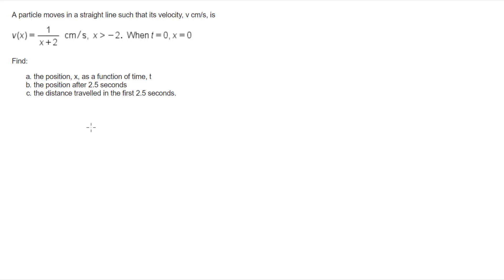In this video I'm looking at a question where a particle is moving in a straight line such that its velocity is given by this equation. Velocity as a function of position is 1 over (x plus 2). We're also told that x is always greater than negative 2, and when time equals 0, x equals 0. We're after the position as a function of time, and then finding the position at 2.5 seconds and how far the particle has travelled in those first 2.5 seconds.